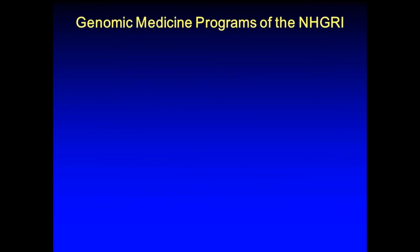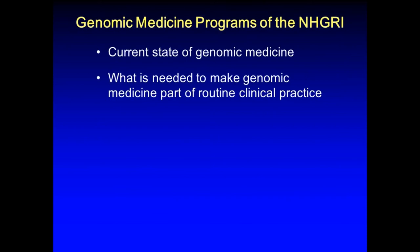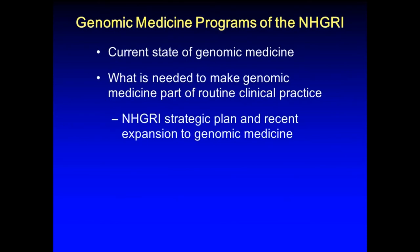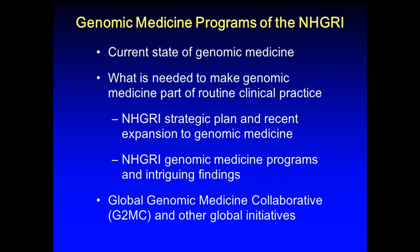I was asked to describe some of the things that we're doing at the National Human Genome Research Institute, or NHGRI. We are one of 27 institutes and centers of the National Institutes of Health, and we're actually one of the smaller ones, but we like to think we punch above our weight. I'll describe the current state of genomic medicine, what might be needed to make it part of routine clinical practice, how we developed a plan to get there, and some of our programs and findings, and how this links with the G2MC.